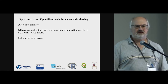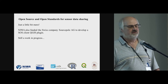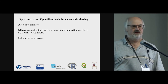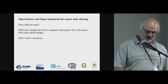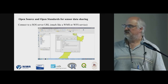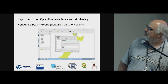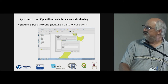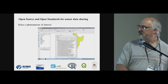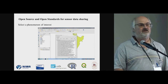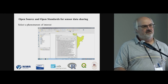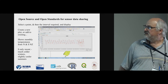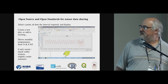With the QGIS SOS client you can display on the map all the locations and get a list of all the different phenomena that are available. You define a service as a URL, get a list of the different observations that are available — the phenomena you can actually access from the service — then download data and visualise that data.